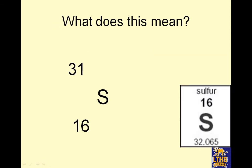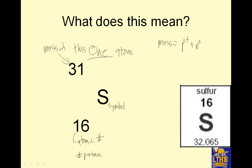What does this mean? Okay, this top number is the mass of this one atom. The mass is found by protons plus neutrons. This is the symbol. This is the atomic number and it's also the number of protons. It's always the number of protons. Now some people think it's always the number of electrons too, and it's not. There is a missing thing up here, and that's the charge.